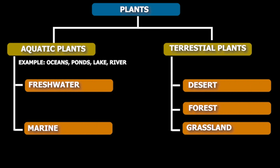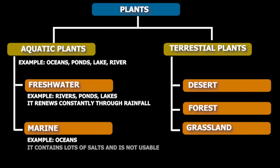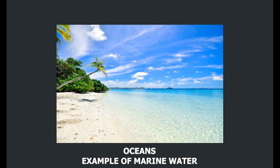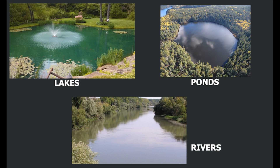Water around us has two varieties. One is marine water, which is found in oceans. The other is freshwater, which is found in ponds, rivers, lakes, etc. It is called freshwater because it renews constantly through rainfall. Marine water contains a lot of salt and thus it is not usable. Oceans are examples of marine habitat, and lakes, ponds, and rivers are examples of freshwater habitat.